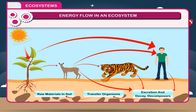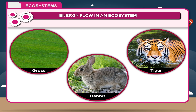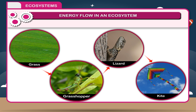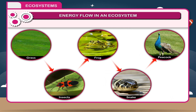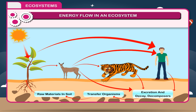A food chain starts with the sun as the energy source and passes energy through one level to another. The chain of food dependence is called the food chain. All food chains are interconnected with each other and form a food web. A food web is a set of interconnected food chains circulating energy in the ecosystem. When we arrange the food web according to different levels, it forms the shape of a pyramid.